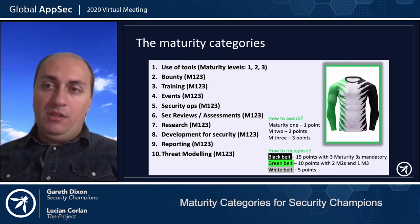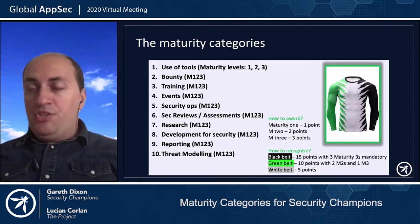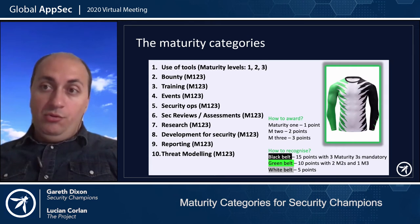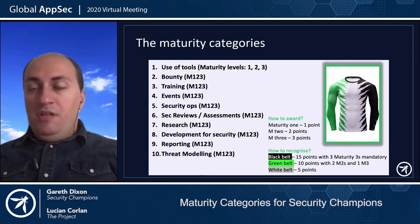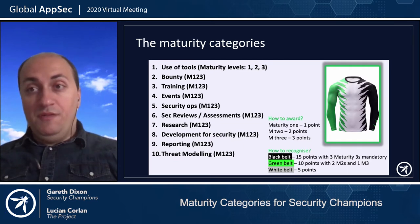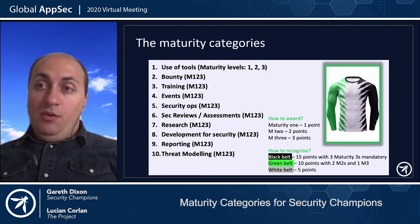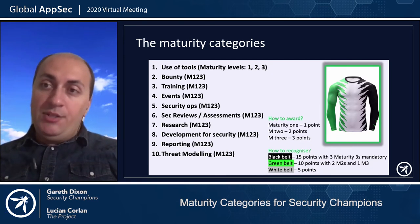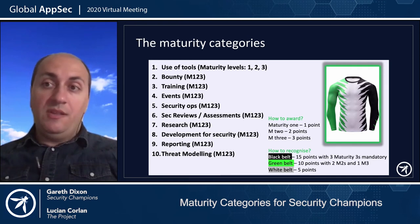The bounty category refers to bug bounties. Security champions can contribute in various ways: they can perform triage, be involved in fixing issues, or even manage a smaller bug bounty challenge. So there are various ways security champions can contribute to bug bounties, and this is what this category is about. Training is very straightforward — most security champion initiatives propose training to security champions, and this can be done at various levels. Depending on the difficulty of the training, champions will be considered more or less mature.